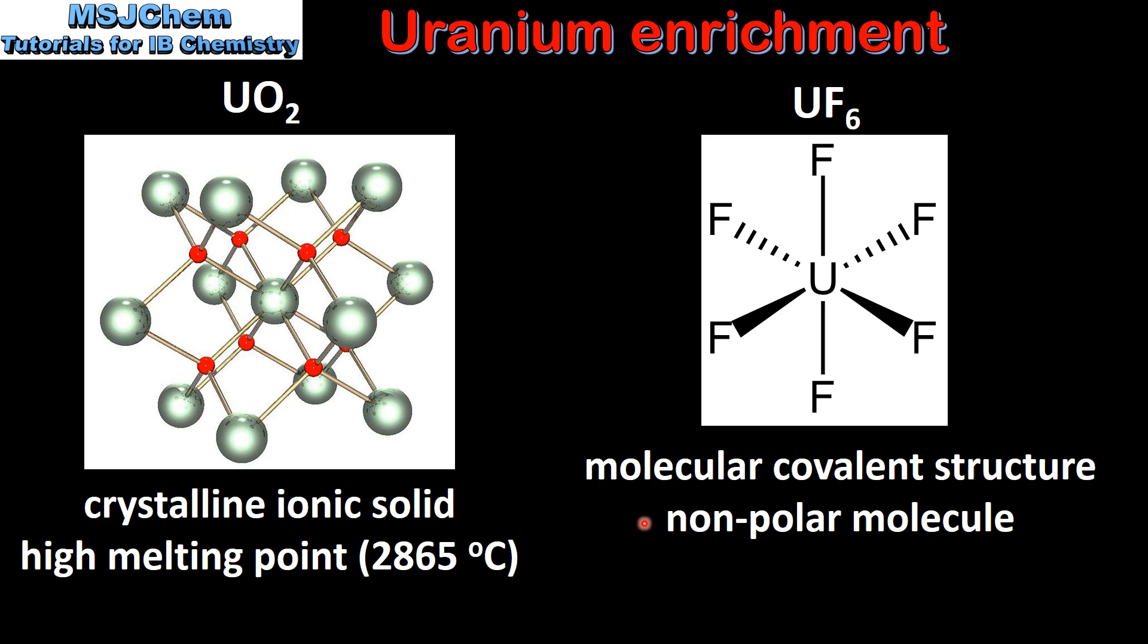Uranium hexafluoride is a non-polar molecule. Because of the difference in electronegativity, the bond between uranium and fluorine is a polar bond. However, because of the geometry of the molecule, the bond polarities cancel out and the molecule has no net dipole moment. This means there are weak intermolecular forces between the molecules and it sublimes at 56.5 degrees C.